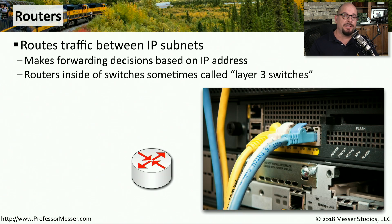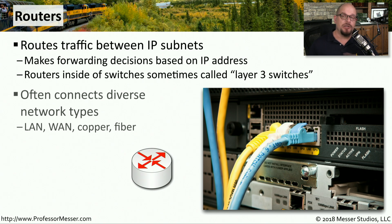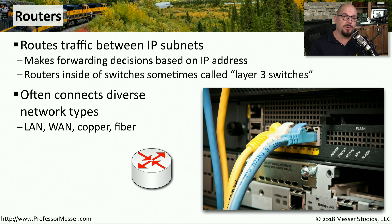A device that makes forwarding decisions based on a destination IP address is a router. These are usually standalone devices, but routing functionality can also be integrated into switches — referred to as multi-layer or layer three switches. It's also common to use routers to connect different types of topologies, such as a serial WAN link, an ethernet copper connection, and an ethernet fiber connection all on the same router.